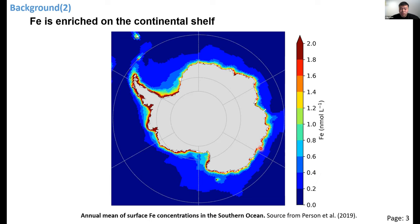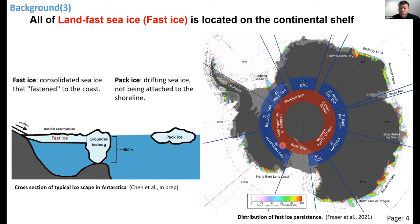This raises the question: is there a possible iron carrier in the Southern Ocean that transports iron from on-shelf to off-shelf regions? This research focuses on land fast sea ice — also called fast ice — which is different from freely drifting sea ice because it is fastened to the coast. Therefore, all fast ice is located on the continental shelf where iron is enriched. Fast ice seasonally breaks up, raising the question of whether broken fast ice crosses the continental shelf and exports iron to iron-limited regions.